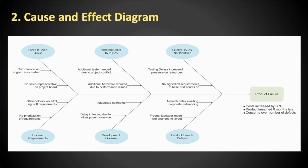Cause and Effect Diagrams are also known as Fishbone Diagrams, Y Diagrams, or Ishikawa Diagrams. This type of diagram breaks down the causes of the problem statement identified into discrete branches, helping to identify the main or root cause of the problem.